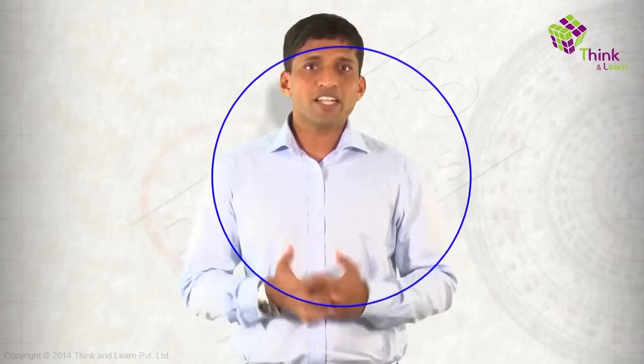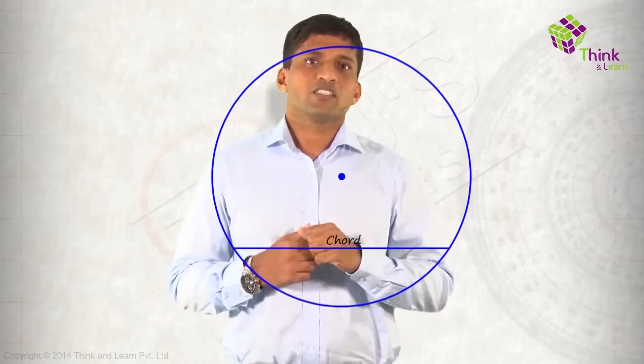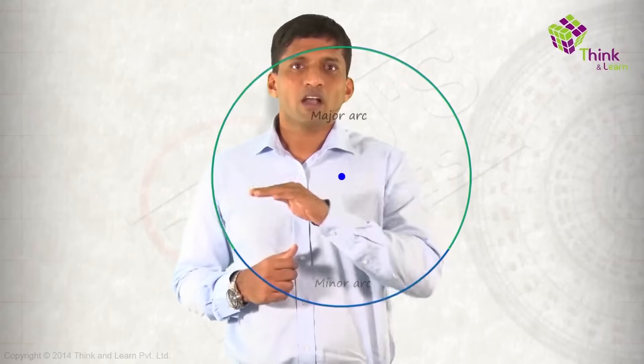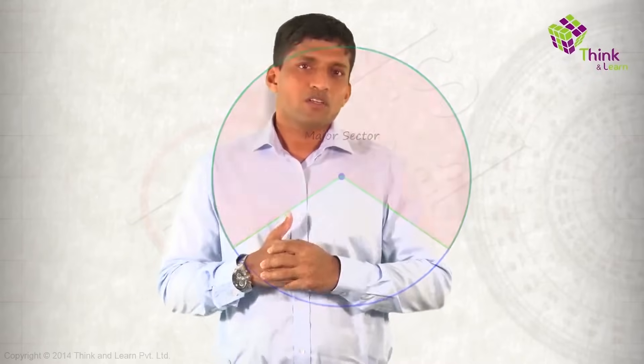So you can clearly differentiate between segments and sectors. Just to put all these names on a single screen for revision: circumference, radius, chord, diameter, minor arc, major arc, minor segment, major segment, minor sector, and major sector. Very simple, right?